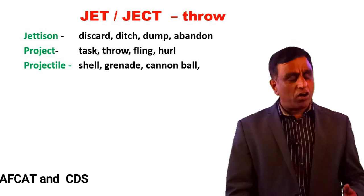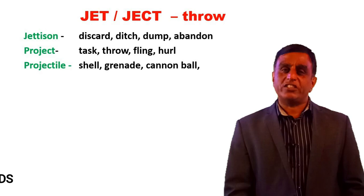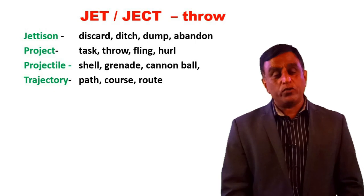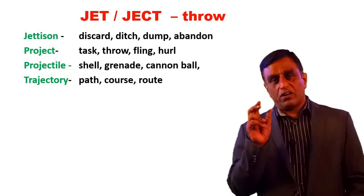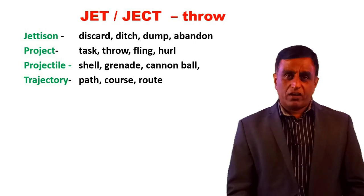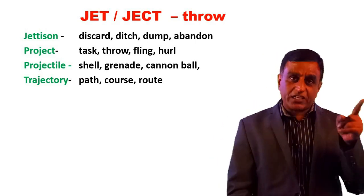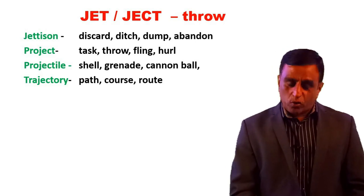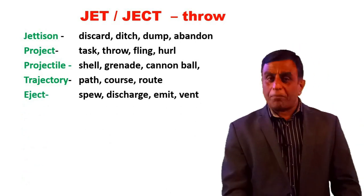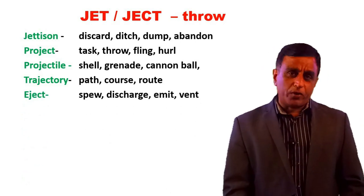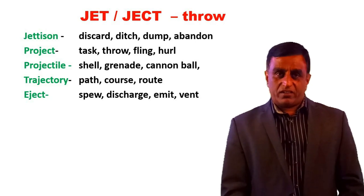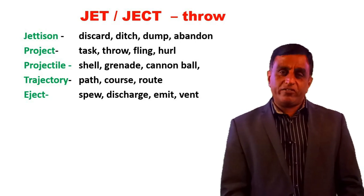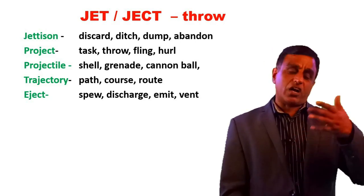A projectile is something which can be thrown at someone or at something — a cannonball, a shell. The path that a particular object takes — like a cricket ball thrown from the fielder toward the boundary — that curved path is called a trajectory. Eject: you may have seen the eject button on your laptop or computer, or a pilot ejecting from a plane that caught fire. Eject means to come out.